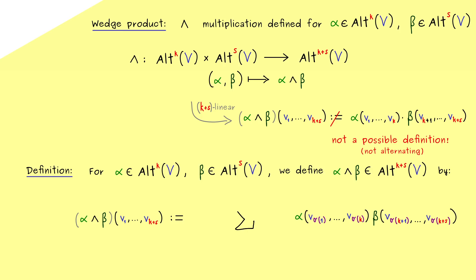And now you might already know, we have to go through all possible permutations sigma. And indeed sigma here is a permutation of a set with k+s elements. Therefore, we write it comes from the symmetric group with index k+s.